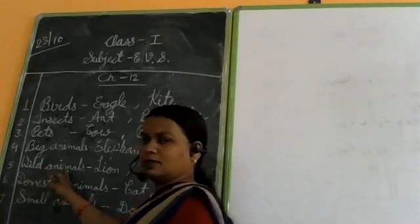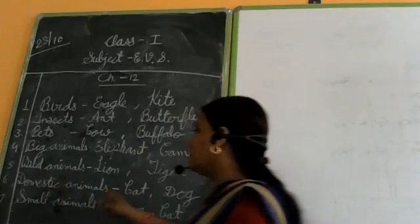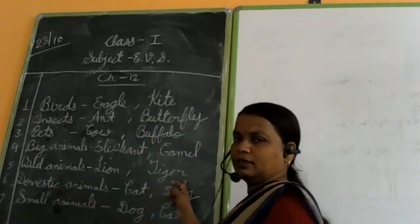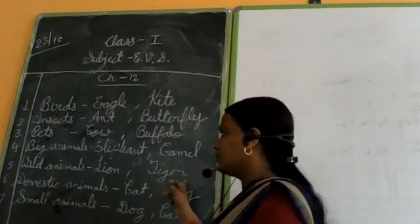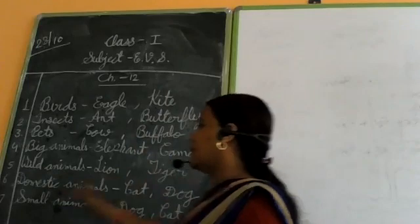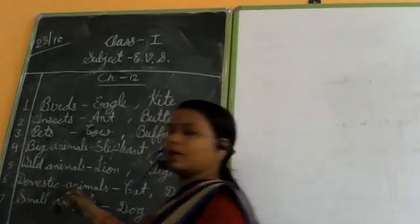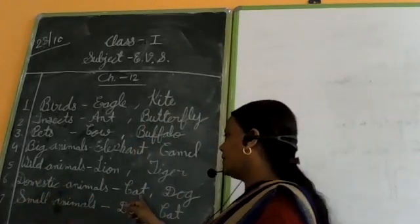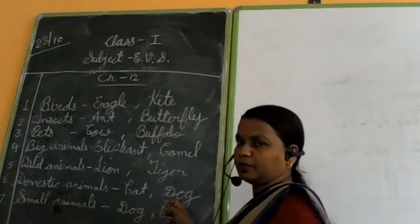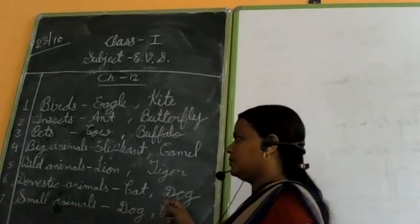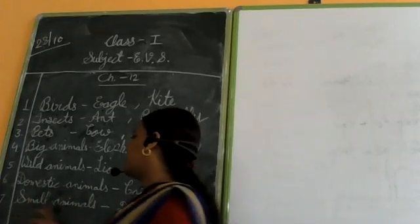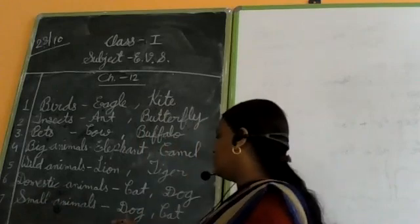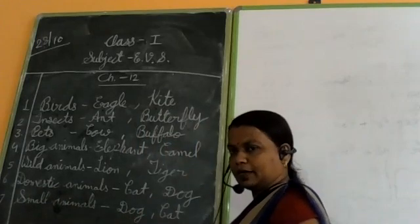Wild animals mean lion and tiger. Next, domestic animals — cat and dog. And next is small animals — dog and cat.